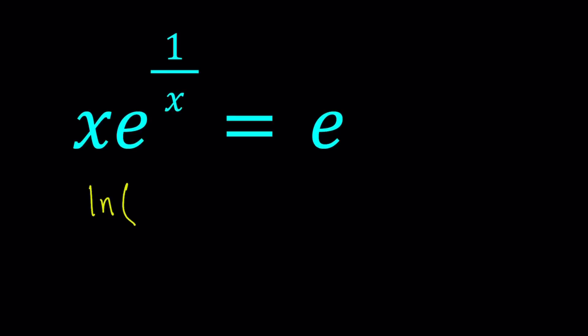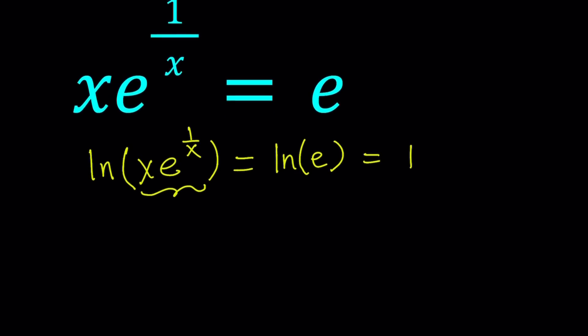So I'm going to LN a product here, x times e to the power 1 over x. And on the right hand side I'm just going to LN e, which is equal to 1. Now here I'm going to use the product property of logs which says if you have the log of a product, then you can write it as a sum of two or more logs. So this can be written as LN x plus LN e to the power 1 over x, and that is equal to 1.